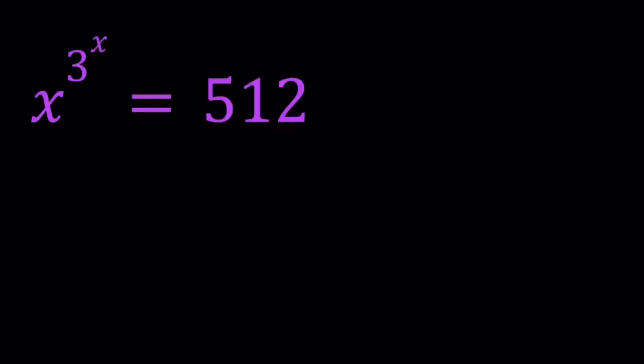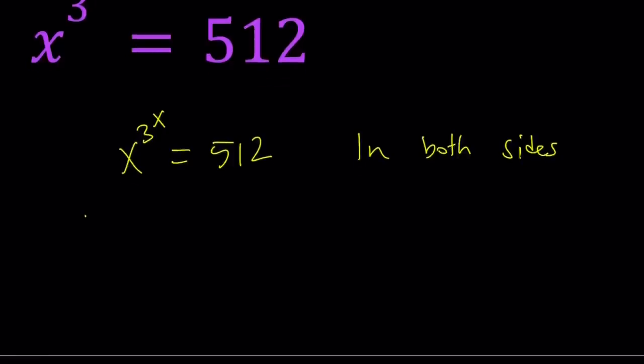First of all, I want you to set these equal to each other and then ln both sides. A lot of times with exponential equations, if you don't have an immediate solution you may want to ln both sides, bring the exponents down and look at it from a different angle. That's definitely going to help. So we have ln x to the power 3 to the power x equals ln 512. Now, in case you didn't know, 512 can be written as 2 to the 9th power or 8 to the 3rd power.